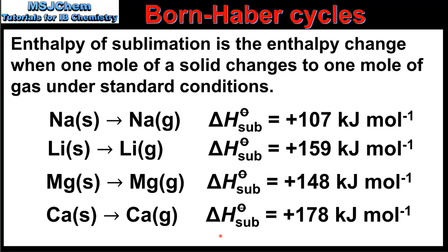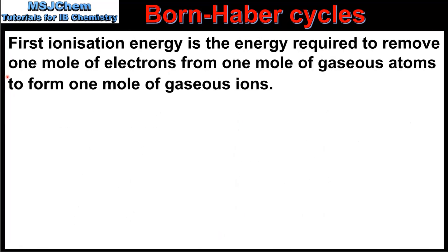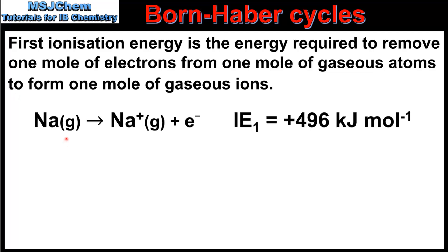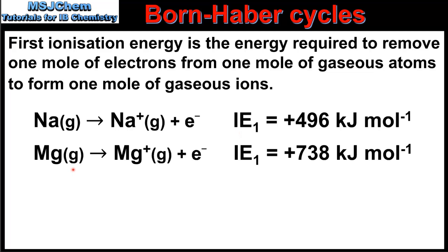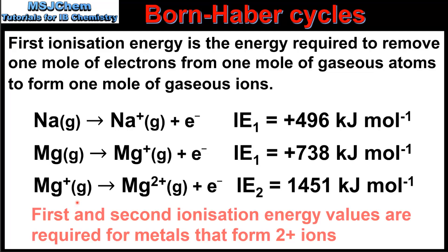Moving on to first ionization energy, which is the energy required to remove one mole of electrons from one mole of gaseous atoms to form one mole of gaseous ions. Here we have the first ionization of sodium, where one mole of gaseous sodium ions is formed from one mole of gaseous sodium atoms, with a value of positive 496 kJ per mole. Next we have the first ionization of magnesium, followed by the second ionization energy of magnesium, where one mole of gaseous 2+ ions is formed from one mole of gaseous 1+ ions.